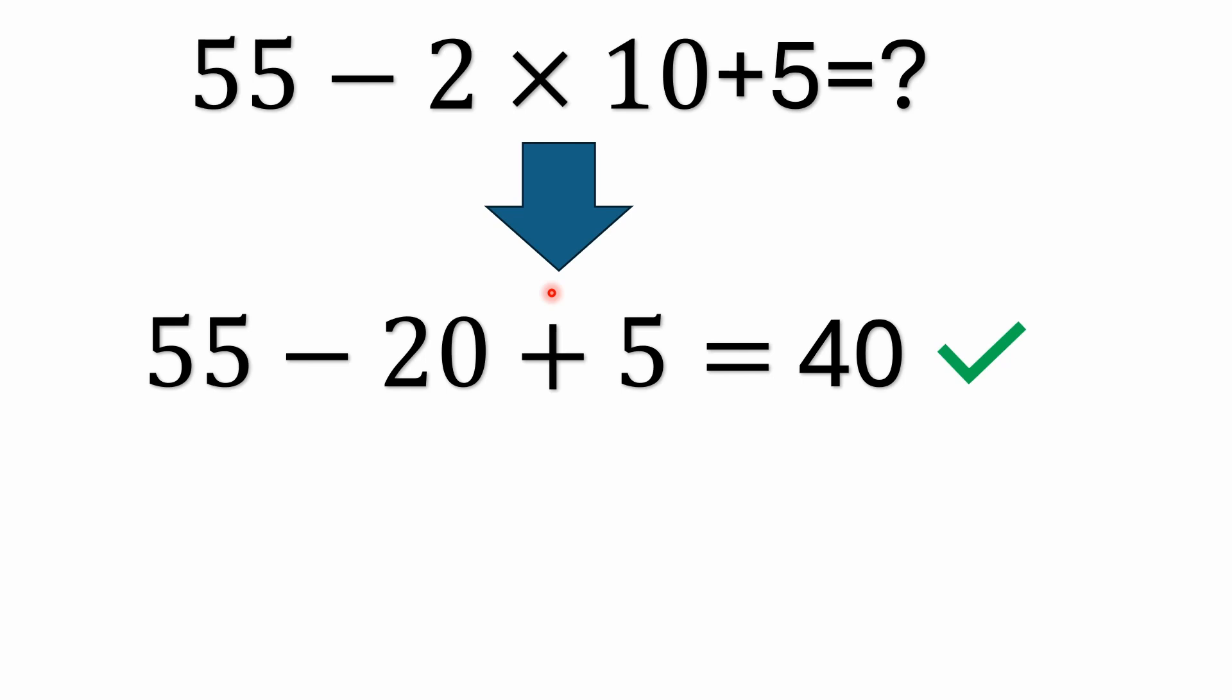So it's 55 minus 20. 2 times 10 is 20 and there's a minus sign out front so it's 55 minus 20 plus 5 equals 40. 40 would be the correct answer.